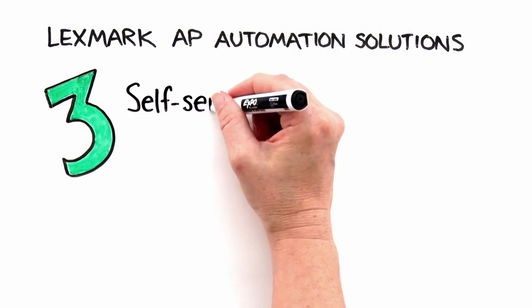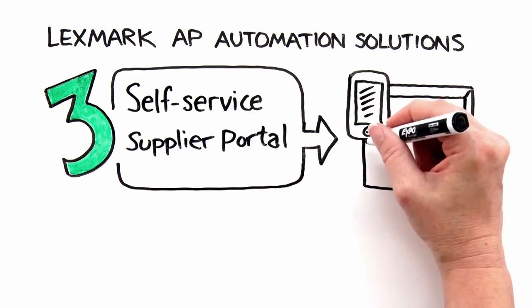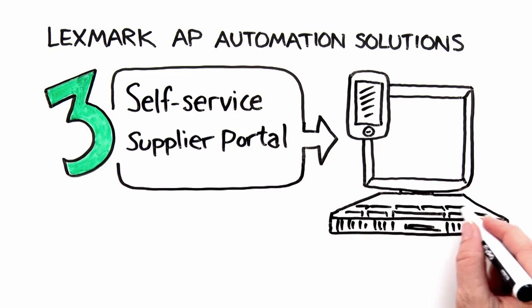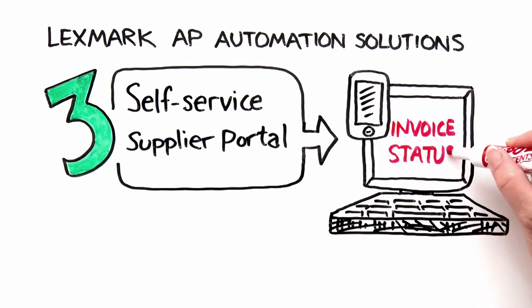Using a self-service supplier portal, vendors are happy. Besides submitting invoices through the portal, they can now easily check invoice and payment status online. No more waiting. And Ken's AP team can spend less time fielding supplier inquiries and focus on more important tasks like ensuring invoices are paid on time.